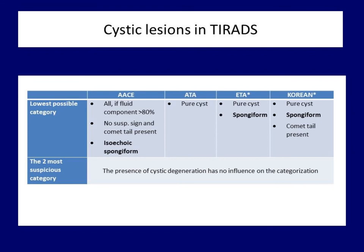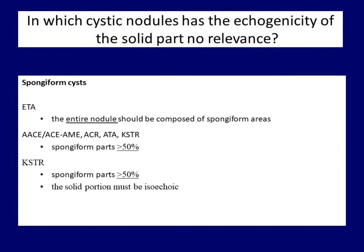It is worth distinguishing spongiform appearance from spongiform nodule. Spongiform appearance — also known as honeycomb or puff pastry — means an area composed of tiny cystic spaces separated by fibrous septae. Some authors and the ETA restrict the term 'spongiform nodule' for nodules entirely composed of spongiform areas, while others including the three American societies and Korean Thyroid Society define it when microcystic areas exceed 50% of the nodule. Furthermore, Korean and in part the AACE guidelines restrict the use of 'spongiform nodule' to isoechoic nodules, while ACR and ATA do not.